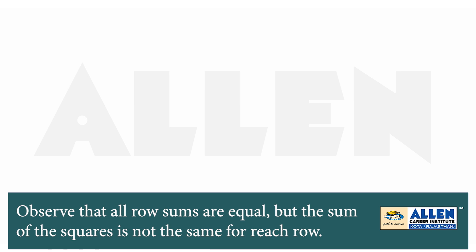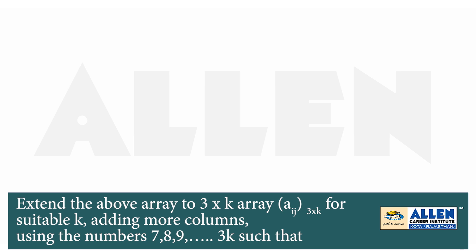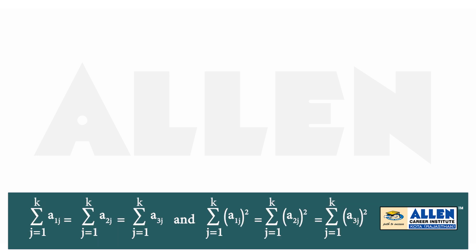Observe that all row sums are equal, but the sum of squares is not the same for each row. We need to extend the given array as a 3×k array — that is, we need to add certain more columns such that the sum of each row as well as the sum of squares of each row become the same. We need to give one such k.